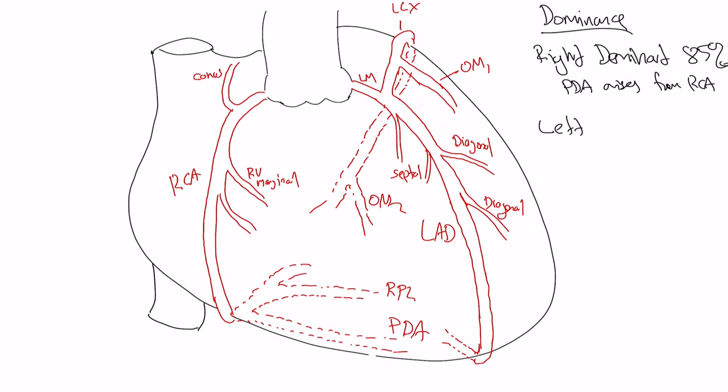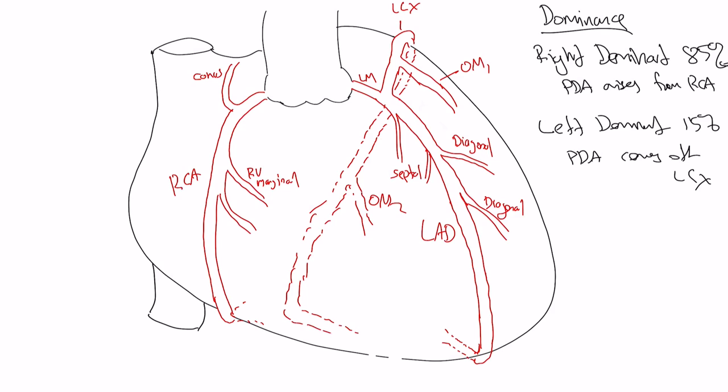The other people left dominant, 15% of the people will have that. That's when the PDA comes off the circumflex. In that situation, the right coronary RCA would basically only be supplying RV marginals. It is not very important. But the circumflex would be very large. It's going to come down along the AV groove and supply the PDA, which we would call the LPDA. An LPDA means the PDA coming off the circumflex, left dominant, whereas an RPDA would mean right dominant.